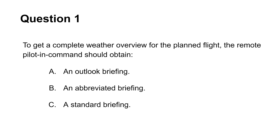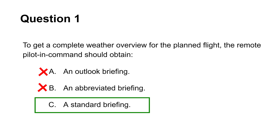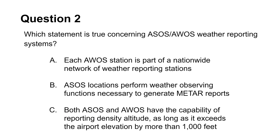So let's take a look at 10 questions to test your knowledge. The first question asks about the type of briefing a pilot should get for a complete weather overview for a planned flight. Choice A is not correct because an outlook briefing contains only the weather forecast. Choice B is incorrect because the abbreviated briefing by definition contains only limited weather information. So the answer is C — standard briefing, since it contains the complete weather overview.